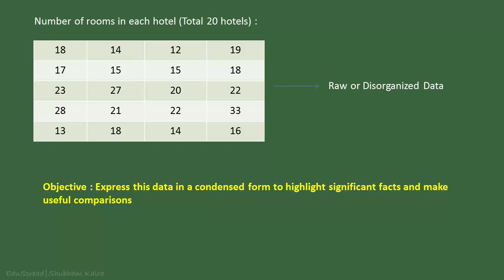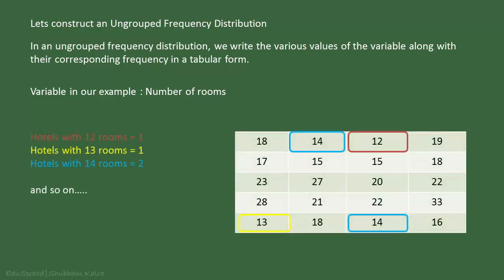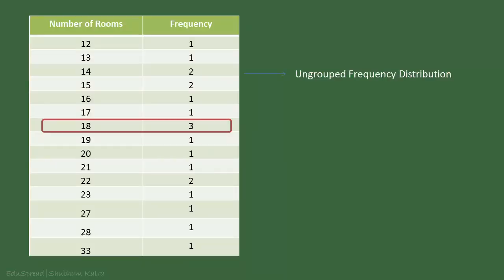Let's make an ungrouped frequency distribution to analyze this data. In an ungrouped frequency distribution, we write the various values of the variable along with their corresponding frequency in a tabular form. In the above example, our variable is the number of rooms. If we count how many hotels have 12 rooms, we get 1. Similarly, we can count how many hotels have 13 rooms, 14 rooms, and so on. I have summarized these counts in the table presented here — this is what we call ungrouped frequency distribution. Here we observe that there are 3 hotels with 18 rooms, 2 hotels with 14 rooms, and so on.